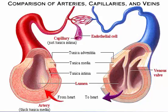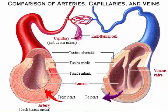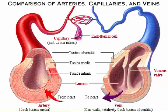Capillaries are the smallest vessels, the link between arteries and veins in the pathway of blood. Capillary walls consist of just a thin tunica intima, making them ideally suited for their role: the exchange of materials between the blood and interstitial fluid. Veins are farthest from the heart, and so they experience the least pressure. Their walls are thinner than arterial walls, and their lumens are larger, allowing them to accommodate a large volume of blood.